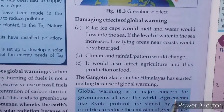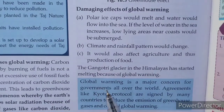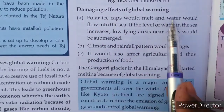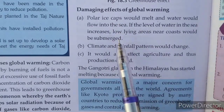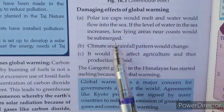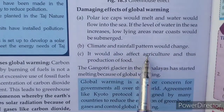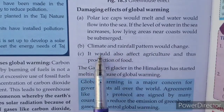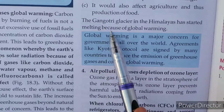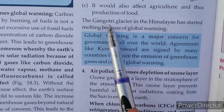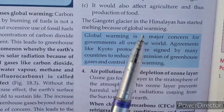The damaging effects of global warming include: melting of polar ice caps, rise in sea level causing flooding of coastal areas, changes in climate and rainfall patterns which affect agriculture and food supply. The glaciers in the Himalayas have started melting because of global warming.